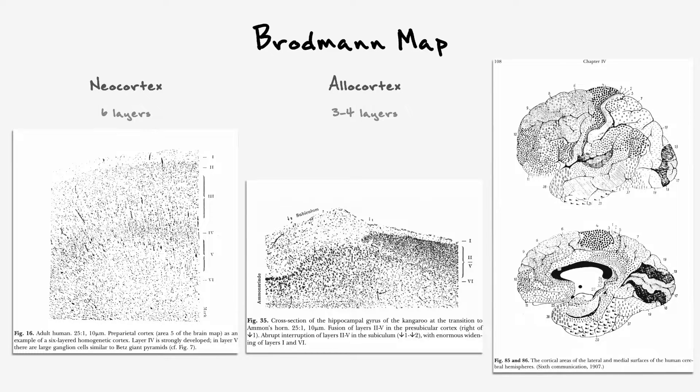The allocortex can be further subdivided into the archicortex and the paleocortex. Examples of the archicortex can be seen in the hippocampus, and for the paleocortex, it is mostly observed in the piriform cortex.